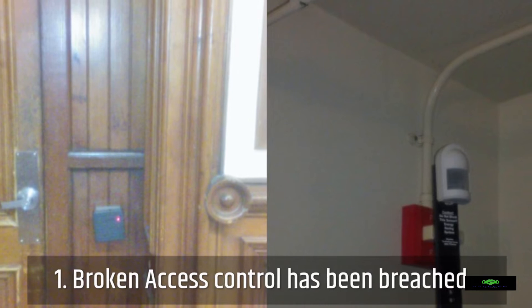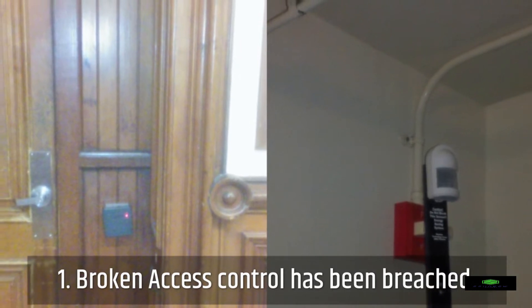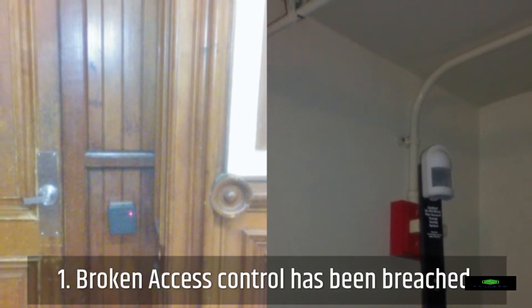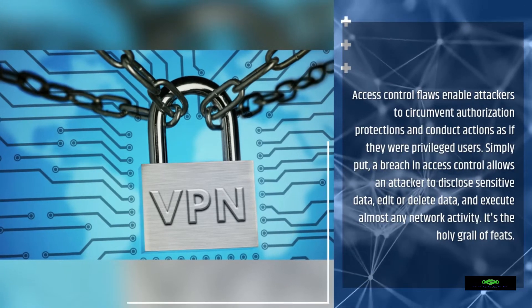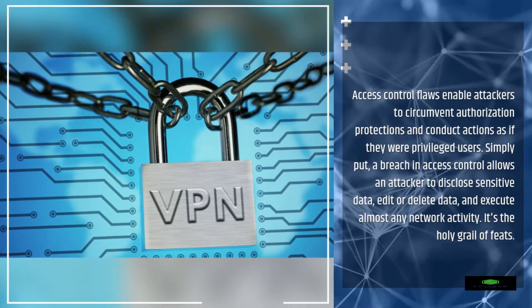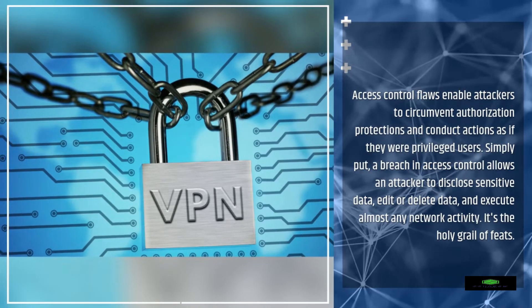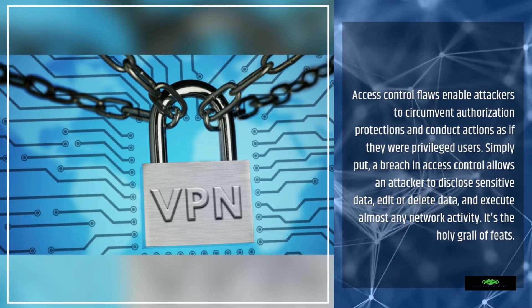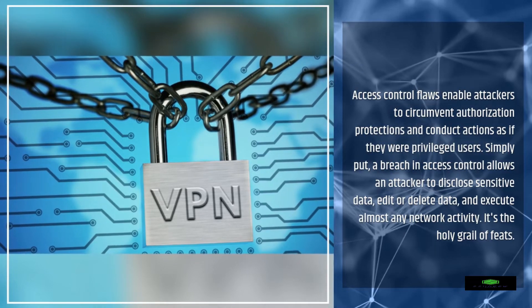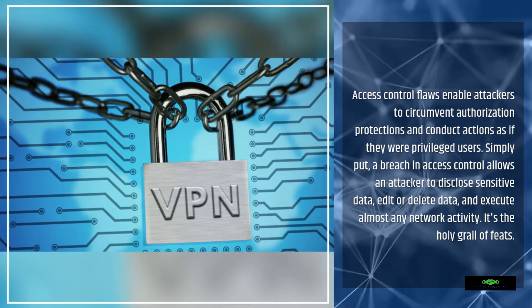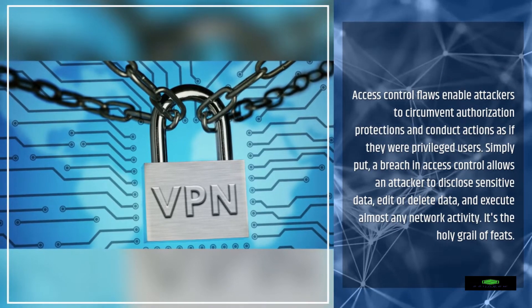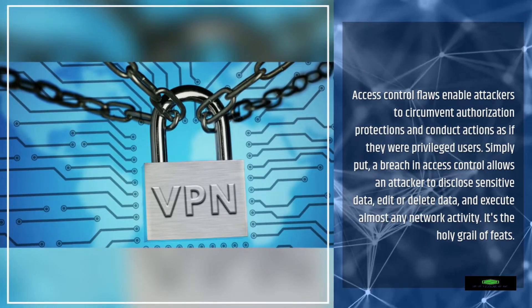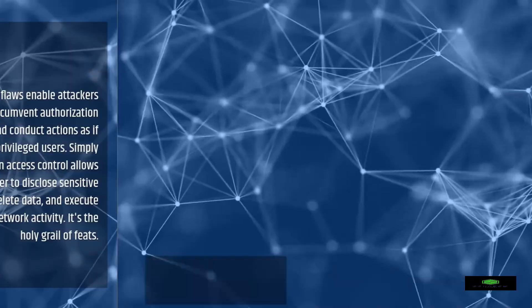Broken access control has been breached. Access control flaws enable attackers to circumvent authorization protections and conduct actions as if they were privileged users. Simply put, a breach in access control allows an attacker to disclose sensitive data, edit or delete data, and execute almost any network activity. It's the holy grail of exploits.